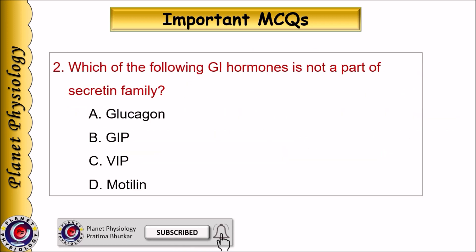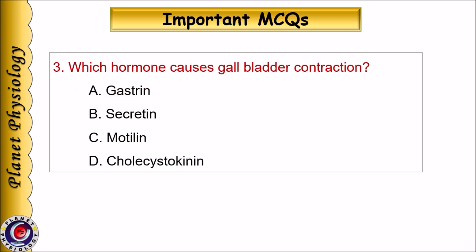Which of the following gastrointestinal hormones is not a part of the secretin family? A. Glucagon, B. GIP, C. VIP, D. Motilin. Which hormone causes gallbladder contraction? A. Gastrin, B. Secretin, C. Motilin, D. Cholecystokinin.